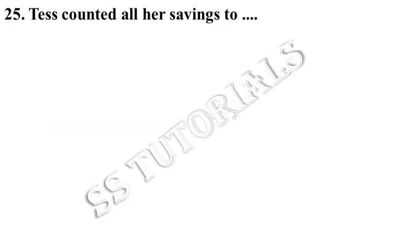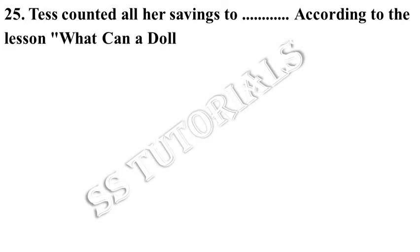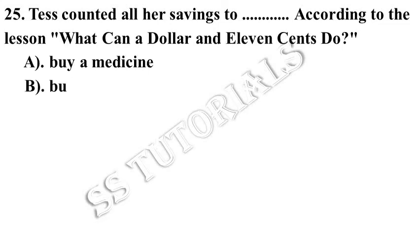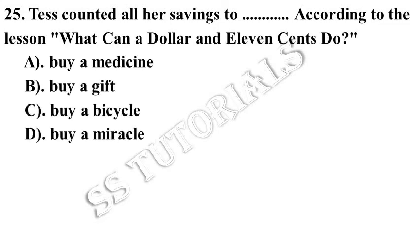Tess counted all her savings to dash, according to the lesson 'What can a Dollar and Eleven Cents Do?' Answer: To buy a miracle.